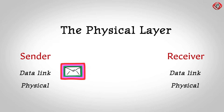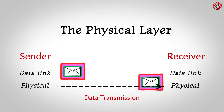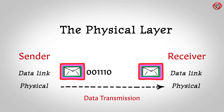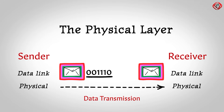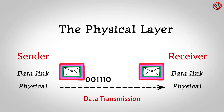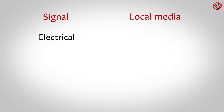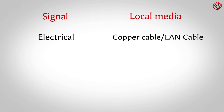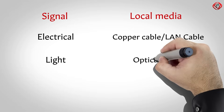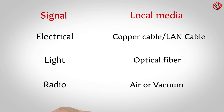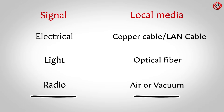Let us discuss each layer one by one in more detail, starting with the bottom-most layer — the physical layer. The physical layer is the place where actual communication takes place. A sequence of zeros and ones digitally represents the messages. The physical layer converts this binary sequence into signals and transmits them over the local media. The signal can be electrical if the local media is copper cable or LAN cable, a light signal in case of optical fiber, and a radio signal in case of air or vacuum. So the signal generated by the physical layer depends on the type of media used to connect the two devices.